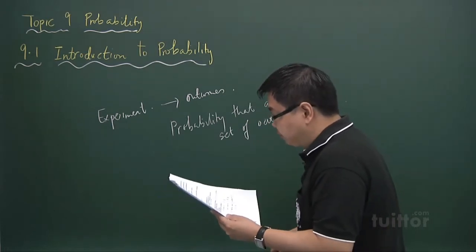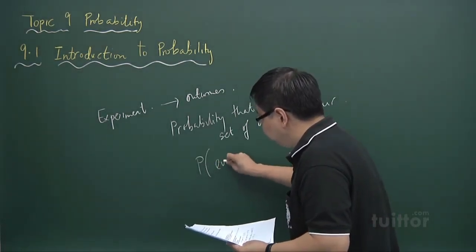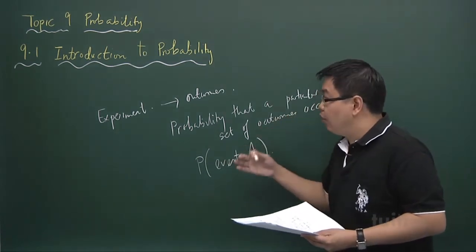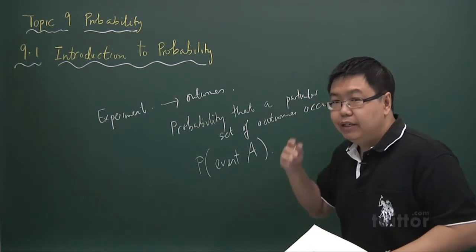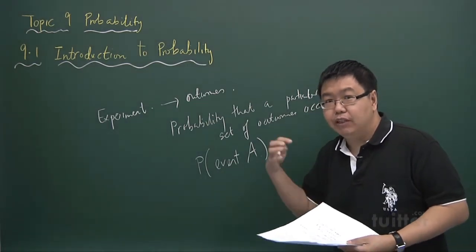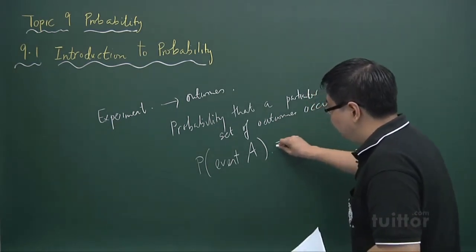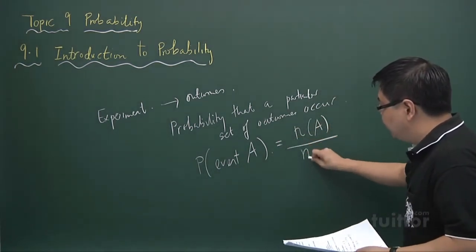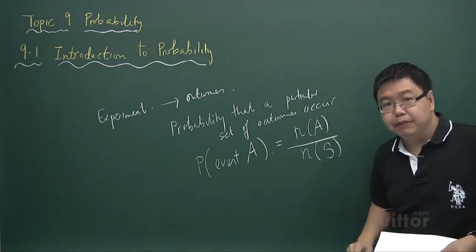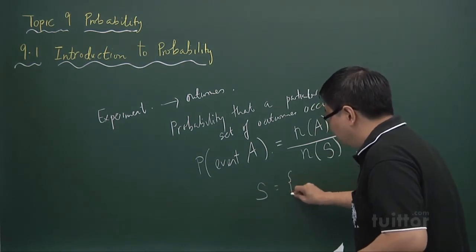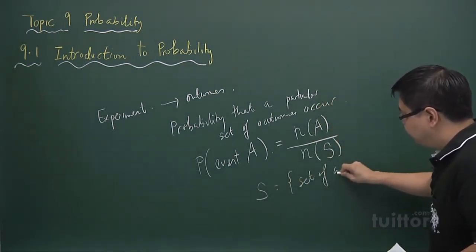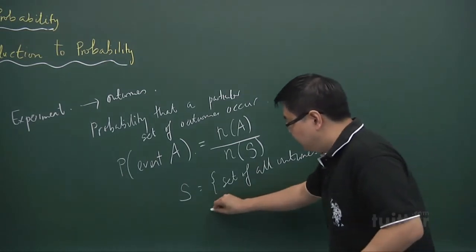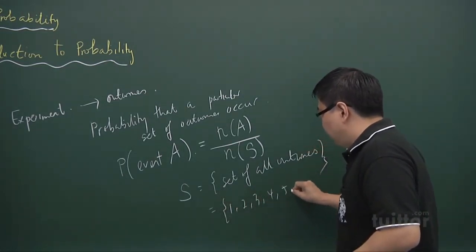The probability of an event occurring — event A is basically a subset of all the outcomes. For example, the event could be that the score on a die is more than four. To find the probability that event A occurs, it can be obtained by looking at the number of elements in A over the number of elements in the whole sample space. This sample space, denoted by S, refers to all the outcomes. In the case of rolling a die, S will comprise one, two, three, four, five, and six.